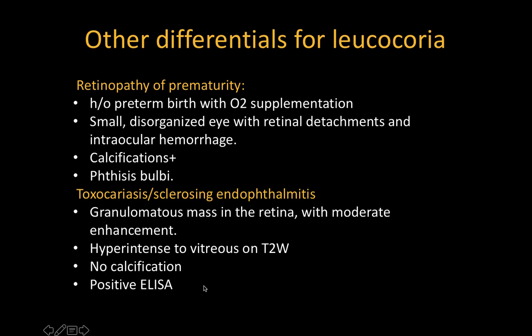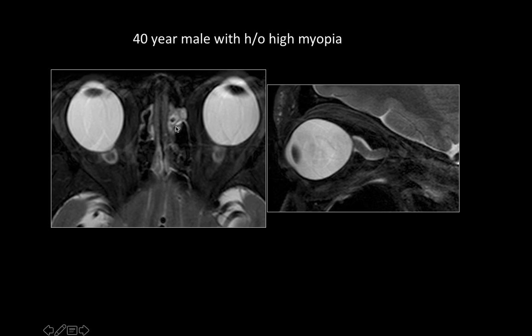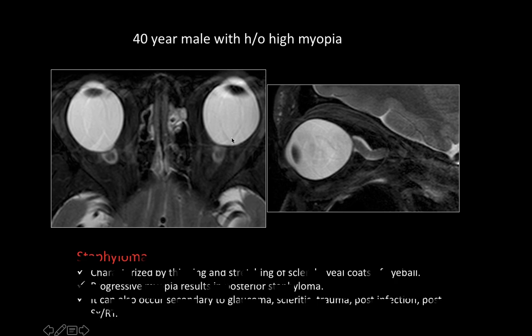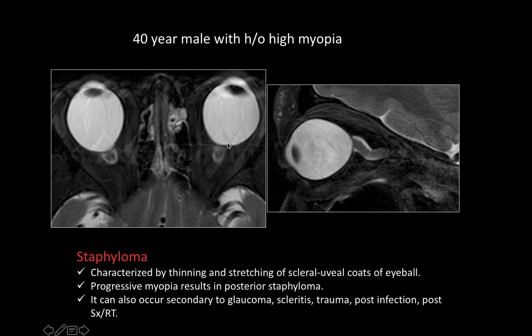This 40-year-old male with high myopia shows enlargement — specifically elongation — of the globe, classic for staphyloma. It is characterized by thinning and stretching of the uveo-scleral coats of the eyeball. Progressive myopia usually results in posterior staphyloma as seen here. It can also be secondary to glaucoma, scleritis, trauma, post-infection, post-surgery, or post-radiotherapy.